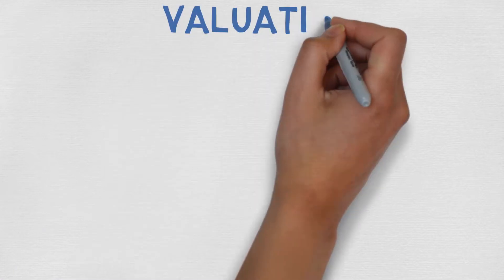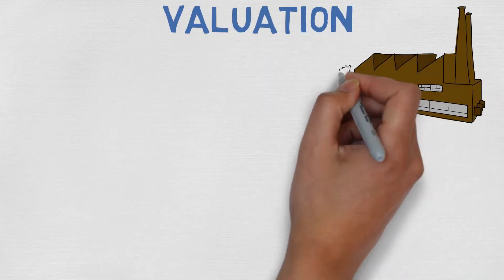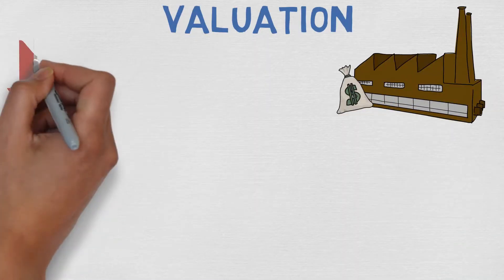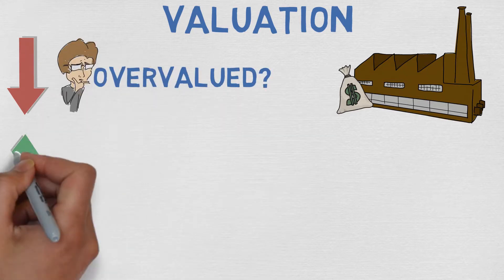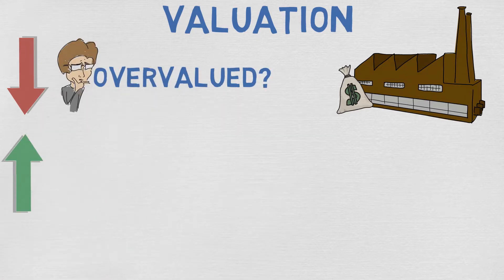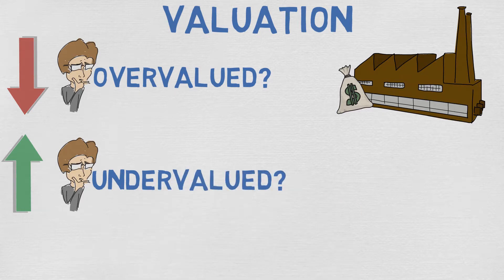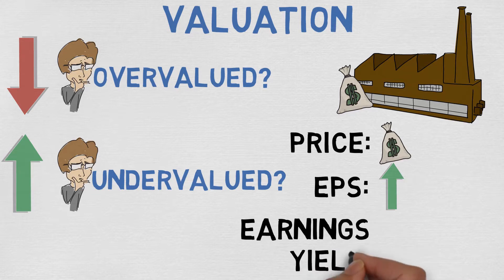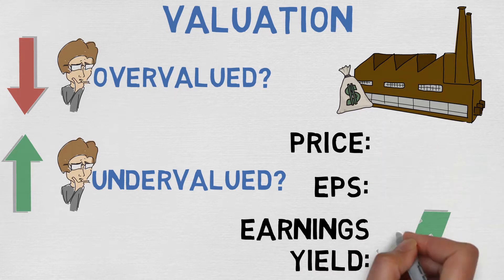You can use the earnings yield to find out if the company is correctly valued. If the earnings yield lowers, the investment could be overvalued. If the earnings yield rises, the stock could be undervalued. If the stock price stays the same but the earnings rise, the earnings yield will increase. This is what value investors look for.